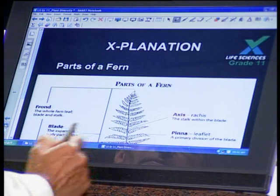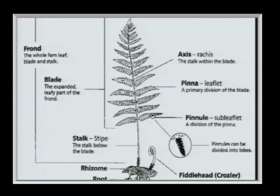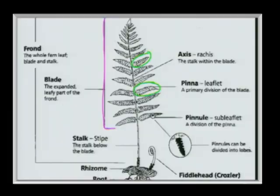Looking at the structure: the fern has true leaves — the leaf blade is made up of smaller leaf-like structures called pinnae, which are subdivisions of the larger leaf, connected by a stalk. So the fern does have true leaves. At the bottom we find the rhizome — the underground stem — which gives rise to other ferns, extending and producing new plants.